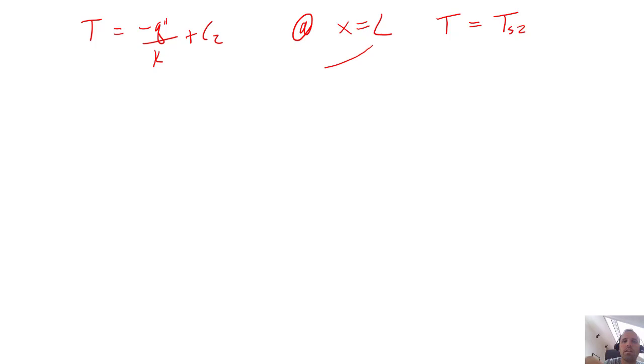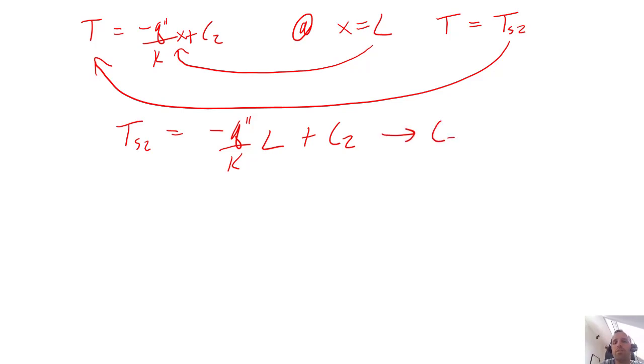We substitute this in - we substitute that in for x and we substitute this T_s2 in for temperature, and we get T_s2 is equal to minus q double prime over k multiplied by L plus c2. We solve for c2, so that just requires some really simple rearranging, and we get that c2 is equal to T_s2 plus q double prime over k times L. So now all we need to do is take our c2 and put this back into the general form of the equation to get this specific form of the equation with our boundary conditions enforced.